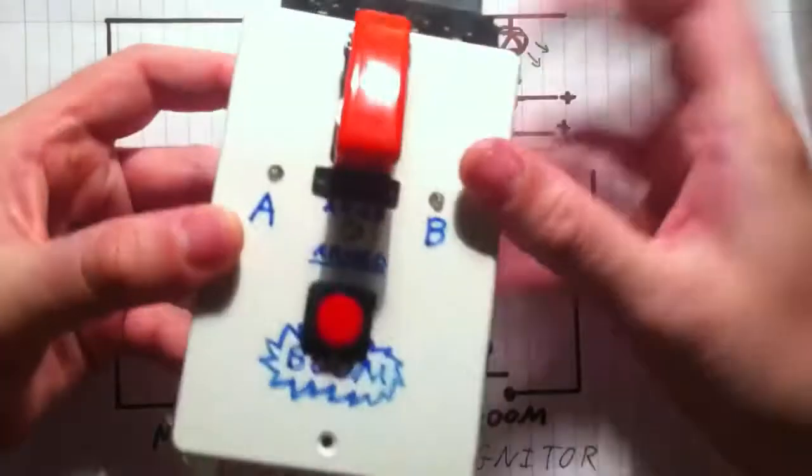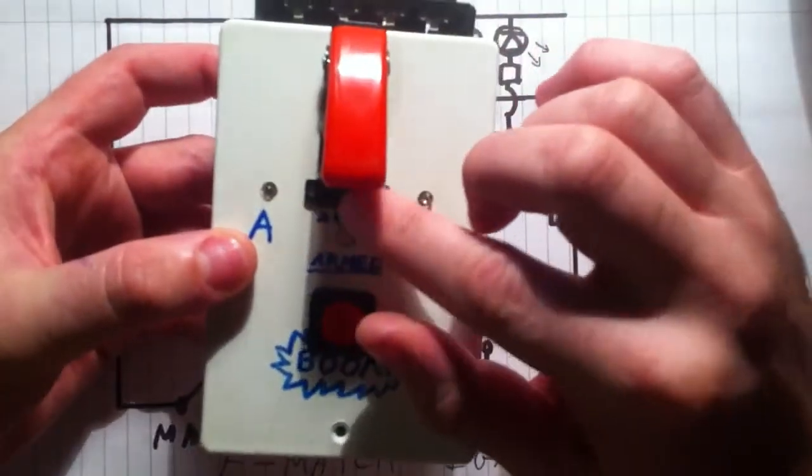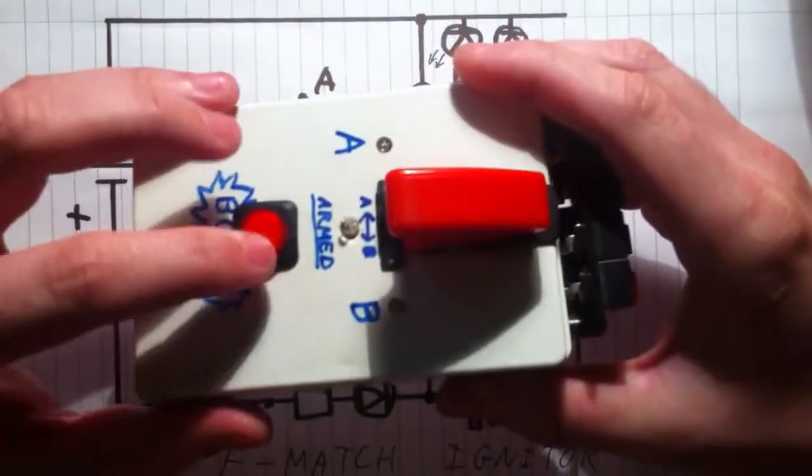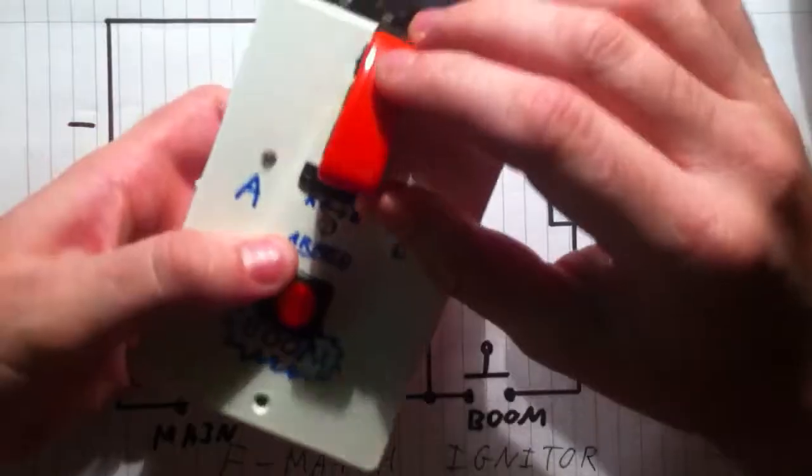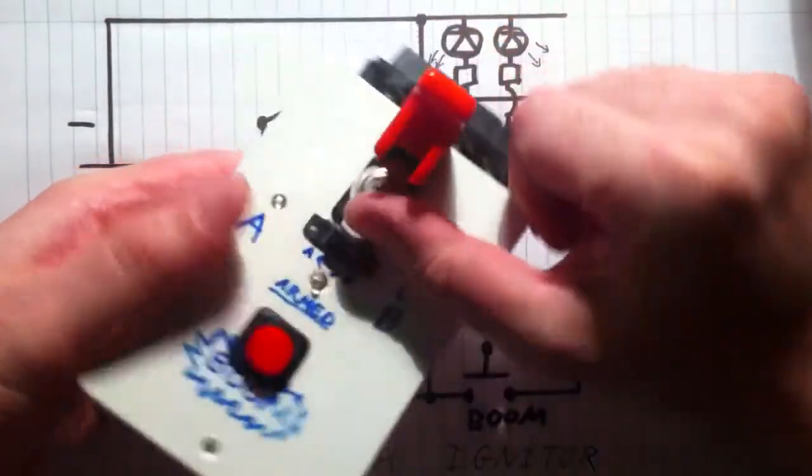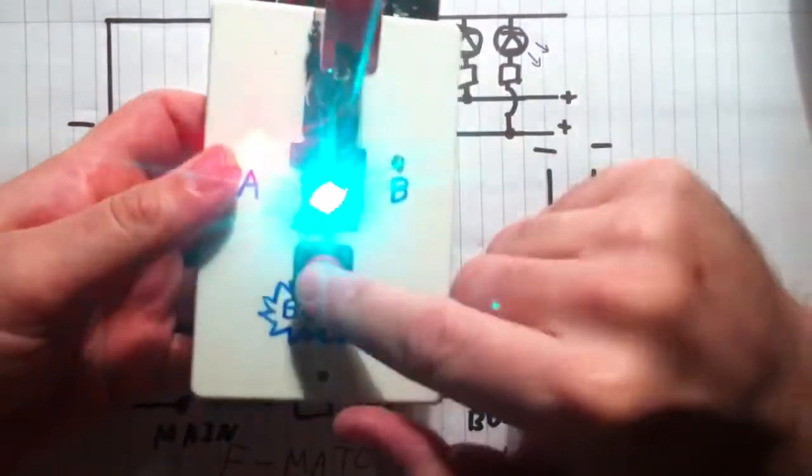It's quite a simple little device. You've got two inputs, three switches total. You've got a main switch, a channel switch, and an ignition switch. I'll show you it working just now. Basically you flip your main switch like this, puts on a nice big bright armed LED.